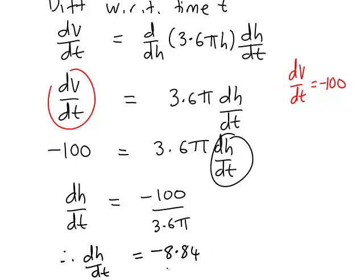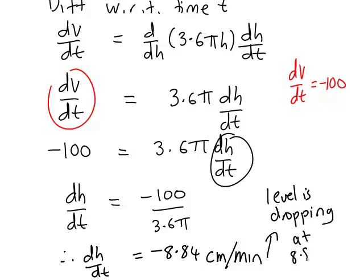And again that's because the water is dropping. So the height of it is decreasing. And what units is this in? Well height was in centimeters and we were looking at water draining in liters per minute. So it's going to be centimeters per minute. So that is that the level is dropping at 8.84 centimeters per minute.